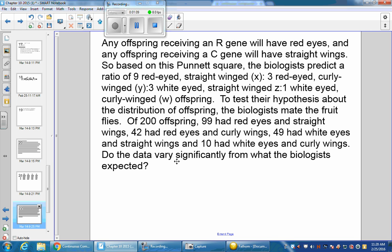To test their hypothesis about the distribution of offspring, the biologists mate the fruit flies. Of 200 offspring, 99 had red eyes and straight wings, 42 had red eyes and curly wings, 49 had white eyes and straight wings, and 10 had white eyes and curly wings. Do the data vary significantly from what the biologists expected?